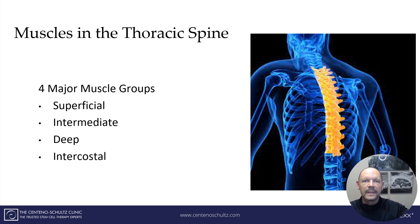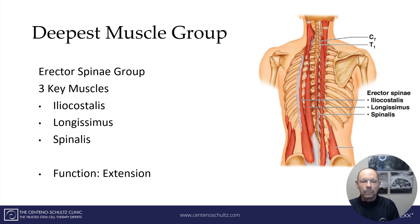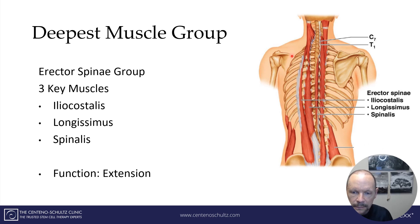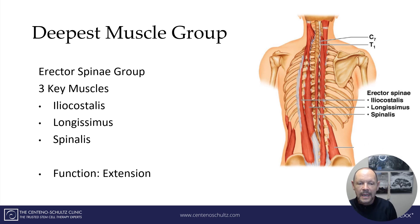Starting from the deep and going superficial: the deepest group is called the erector spinae group, and it's composed of three very thin strips of muscle — the iliocostalis, the longissimus, and the spinalis. They lay right next to each other, and their really important function is they allow us to bend backwards — that's right, extension.